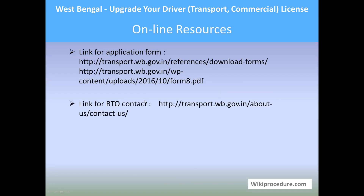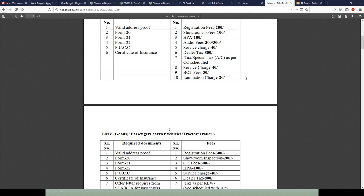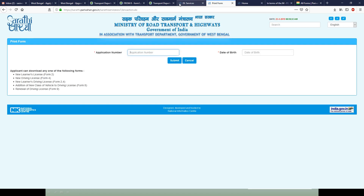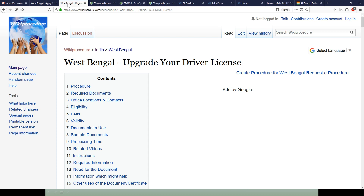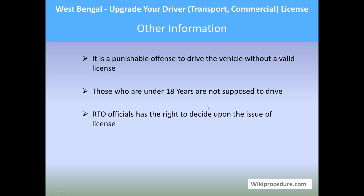Online resources: the website links used in our procedure explanation are very useful for completing the procedure, and we have provided them at appropriate places on our pages to save you valuable time. Other information: it is a punishable offense to drive a vehicle without a valid license. Those who are under 18 years of age are not supposed to drive. Officials have the right to decide upon the issue of a license. We hope this video helped you — don't forget to give us a like and subscribe to our channel for more such videos. Thank you for visiting wikiprocedure.com to learn how to upgrade your driver, transport, or commercial license in West Bengal.